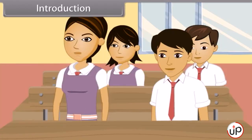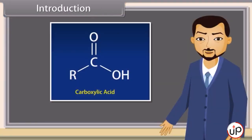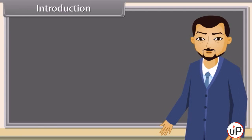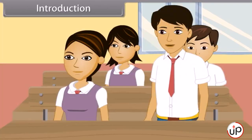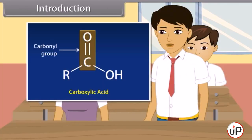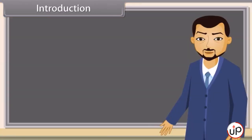Teacher, what are carboxylic acids? Carboxylic acids are the organic compounds which contain a carboxyl group. Who will tell me what is a carboxyl group? Carboxyl group consists of a carbonyl group and a hydroxyl group. Very good, Ramesh. In this lesson, we will learn more about carboxylic acids.